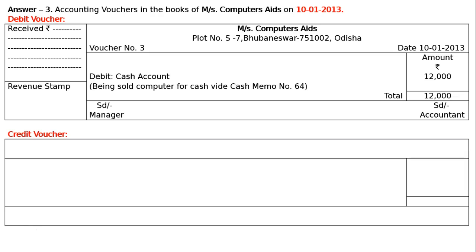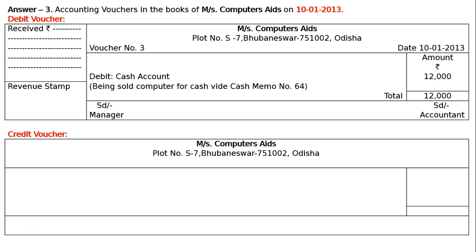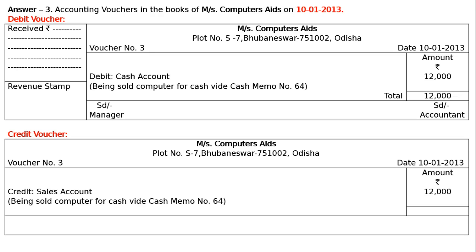Then your credit voucher. Write down the name and address of the shop in the middle. And towards the left side write down the voucher number — this is credit voucher number. It need not be the same as that of debit voucher number; it may be some voucher number 12, 13, 18, 104. Here it is voucher number 3. Date is 10th January 2013. You have to write down the amount with rupee symbol. You have to credit the sales revenue — revenue is increasing, increase in revenue is credited. Hence credit sales account rupees 12,000. Narration: being sold computer for cash, vide cash memo number 64, and total the amount column rupees 12,000.